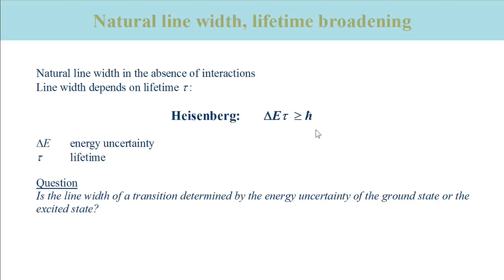Only when the lifetime is infinite, the energy of a state can be determined exactly. A state with a finite lifetime tau, however, has an energy that is uncertain by delta E according to the uncertainty principle.